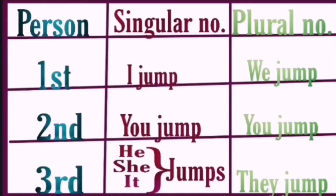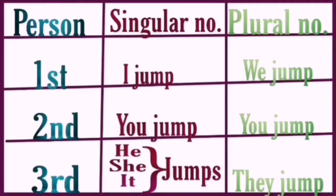Always remember: with he, she, or it — as well as singular nouns (one boy's name, one girl's name, one animal or thing) — we must use S or ES on the verb. For example: 'I jump, we jump, you jump' — but 'he jumps, she jumps, it jumps.' Also: 'Ram jumps, Meena jumps, rabbit jumps.' With 'they,' no S or ES is added — 'they jump.'